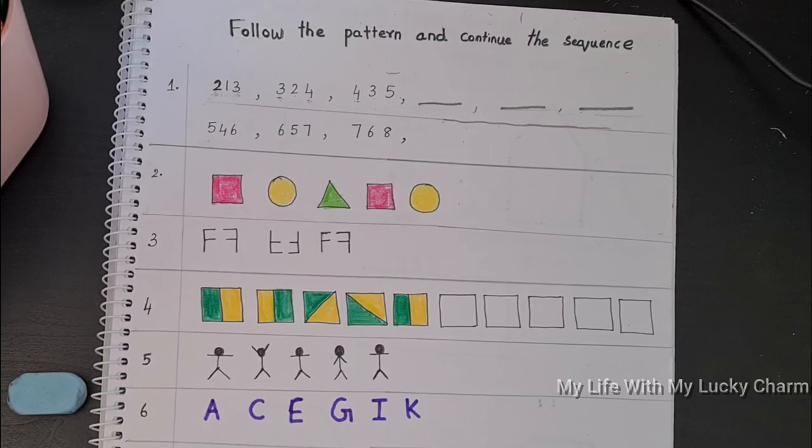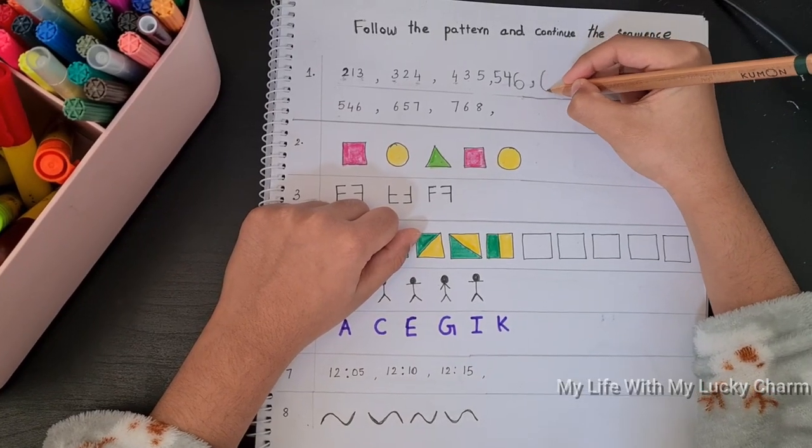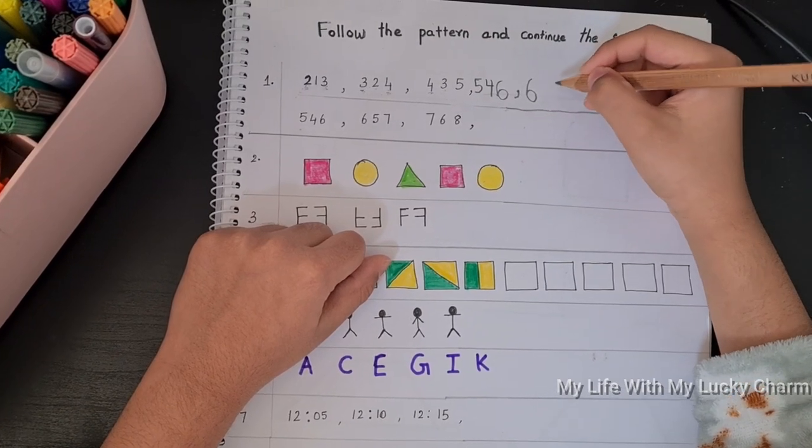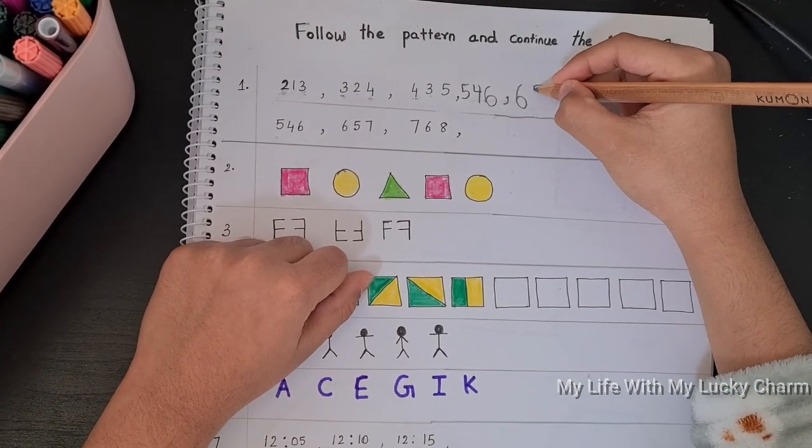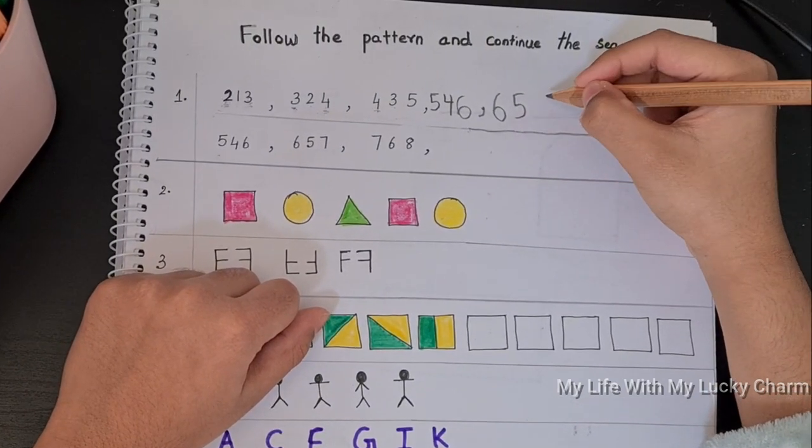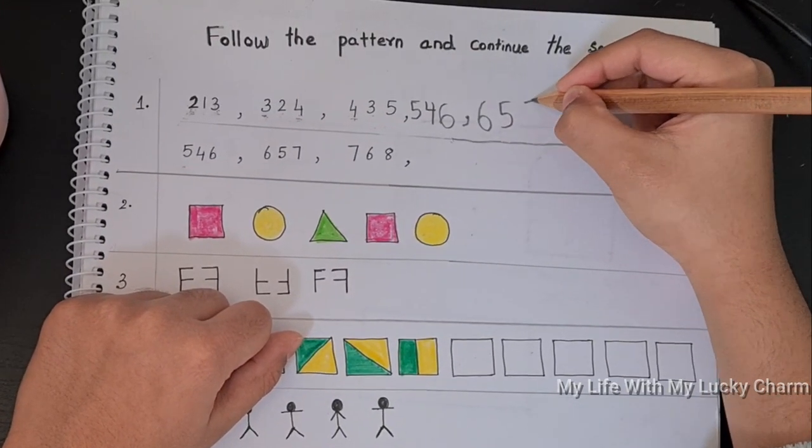Once it starts from 6, then the starting number is 5, so I put in the middle 5, and 6 plus 1 makes 7, so I'll write 7.